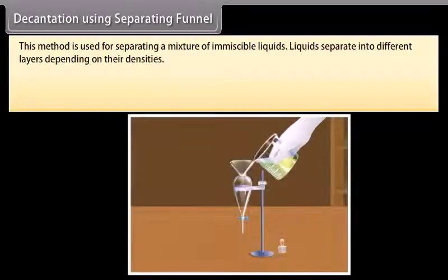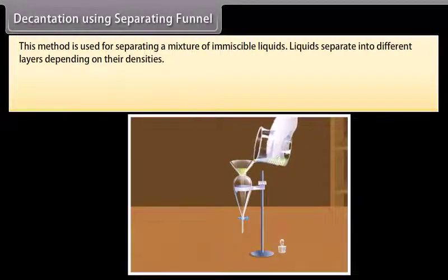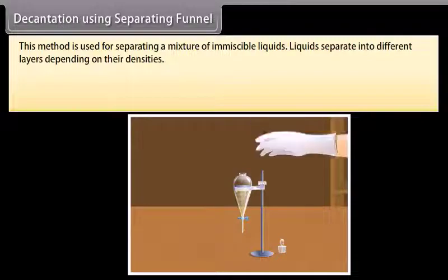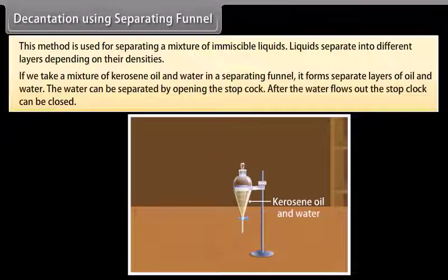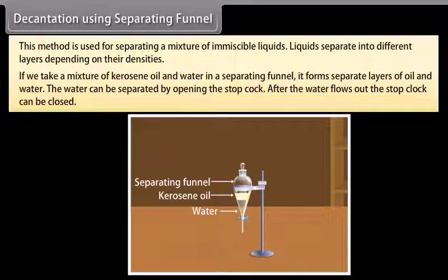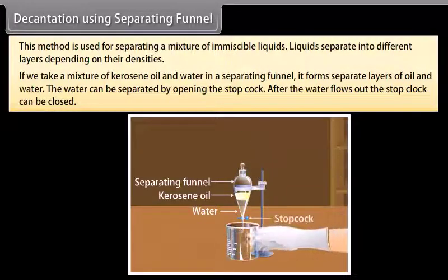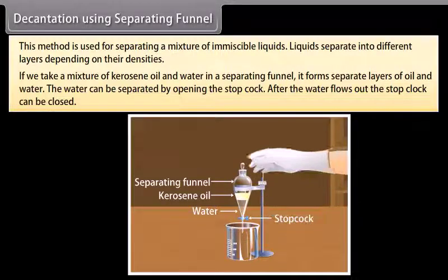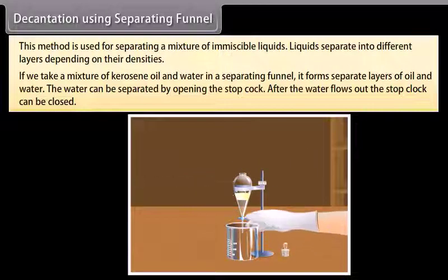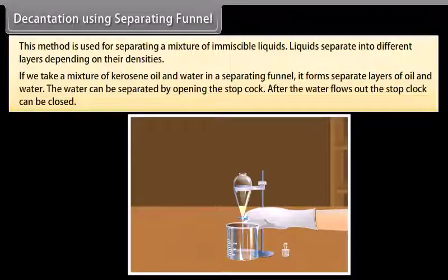Decantation using a separating funnel: This method is used for separating a mixture of immiscible liquids. The liquids separate into different layers depending on their densities. For example, a mixture of kerosene oil and water in a separating funnel forms separate layers. The water can be separated by opening the stopcock; after the water flows out, the stopcock can be closed.